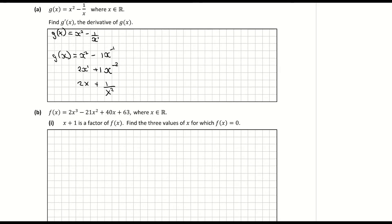Looking now at part b, f of x is given by the following and part 1 is saying x plus 1 is a factor of f of x. Find 3 values of x for which f of x is equal to 0. Okay so they've given us one of the factors. First thing we need to do is find the other two factors. So to do that it's a cubic so there's 3 factors.